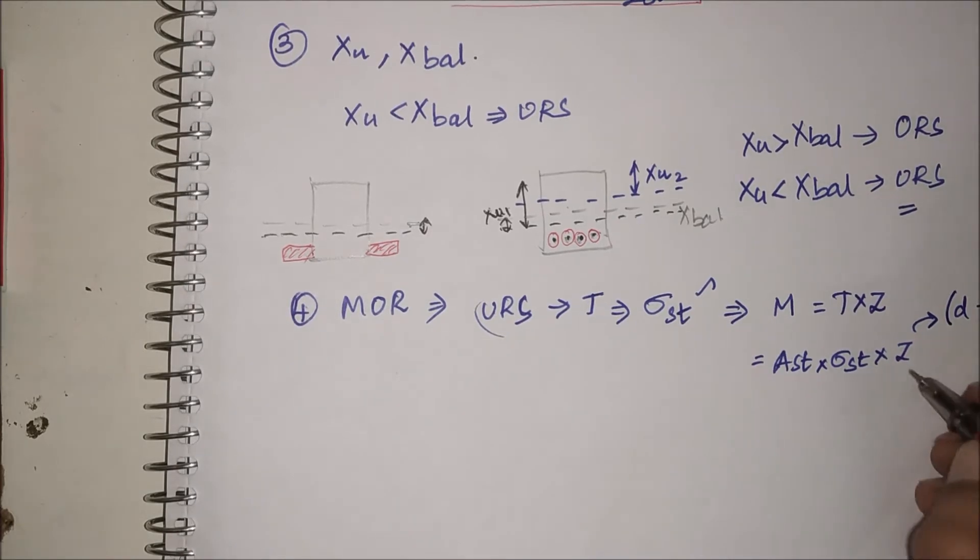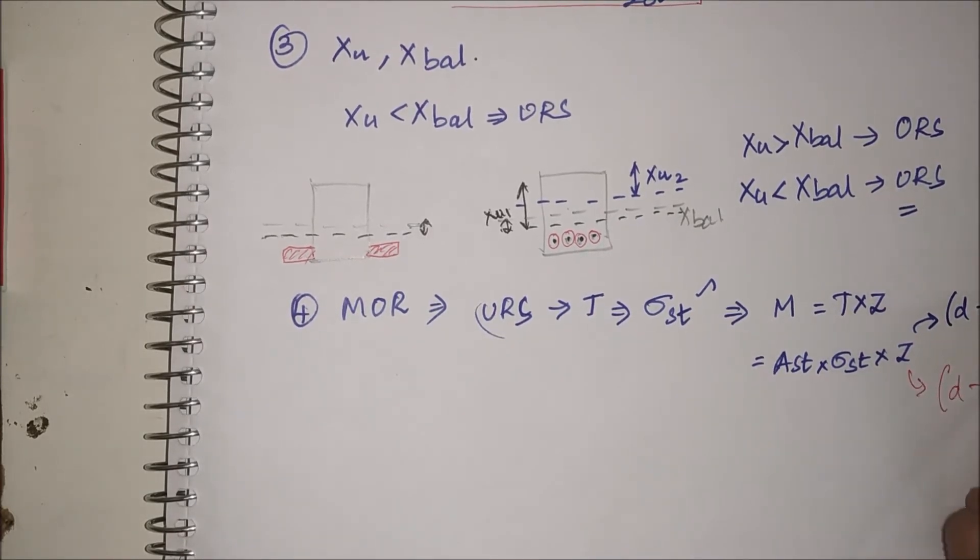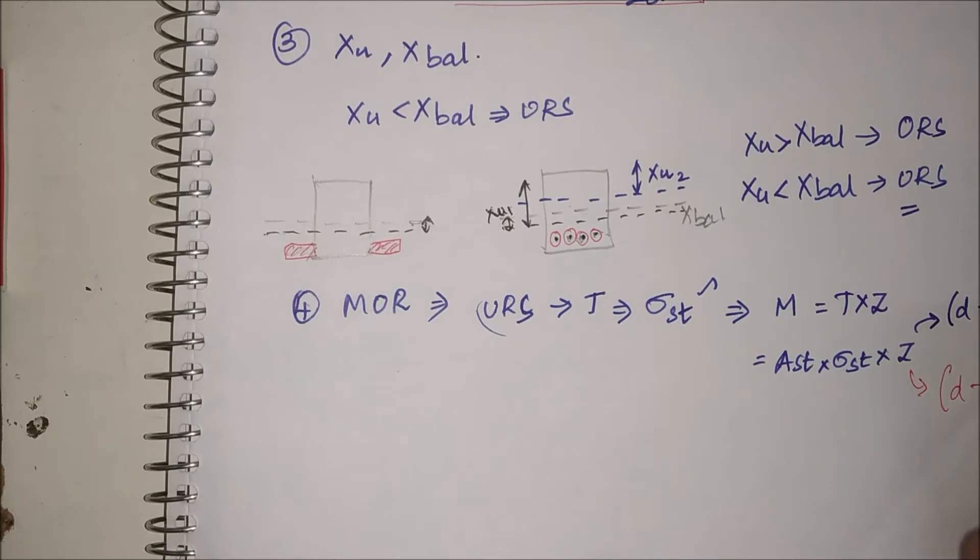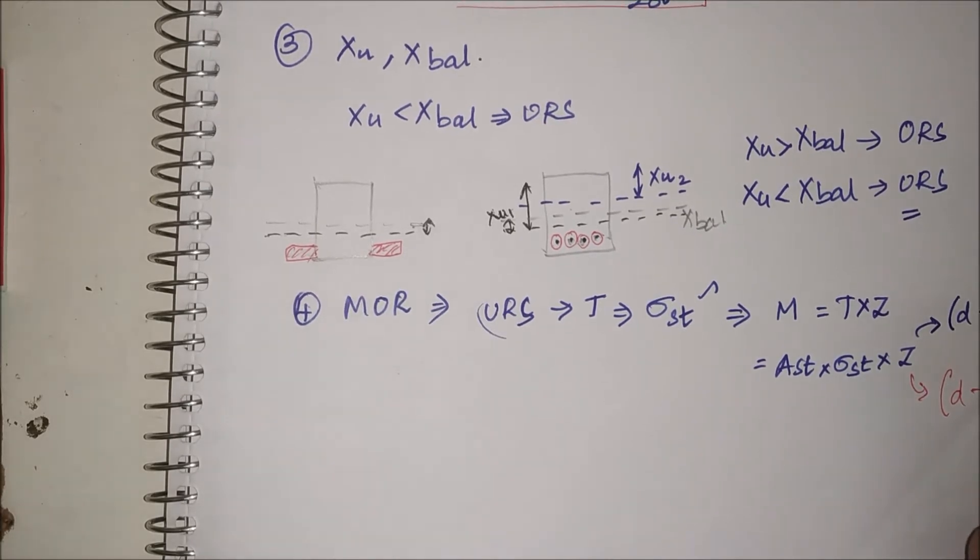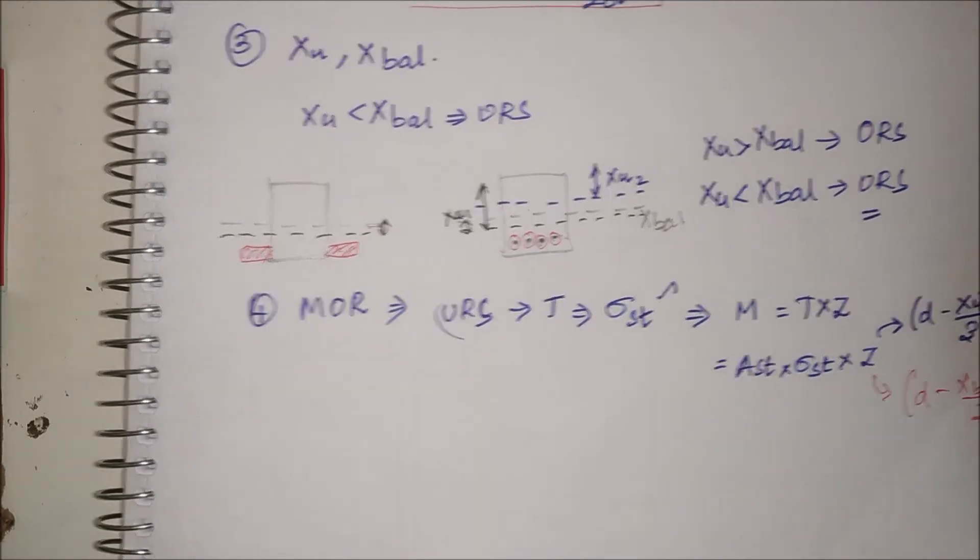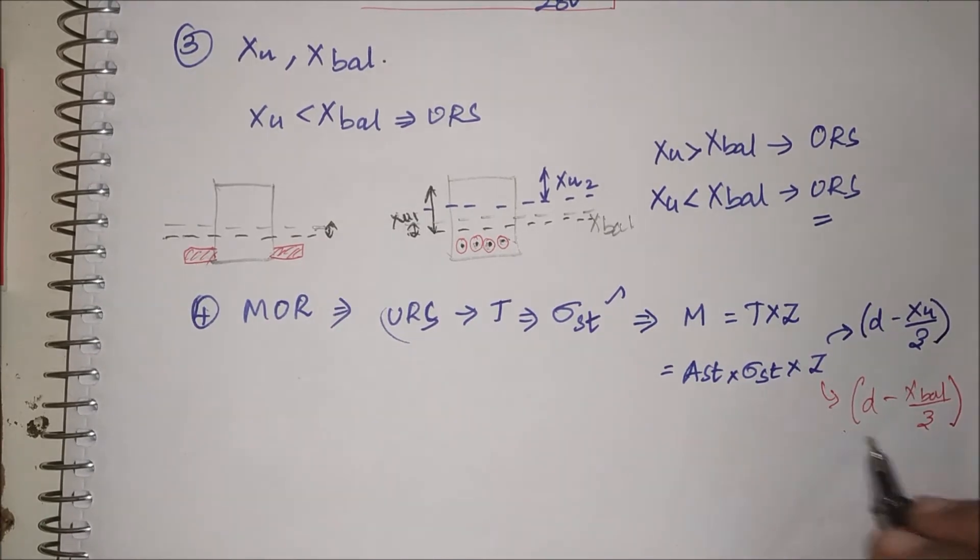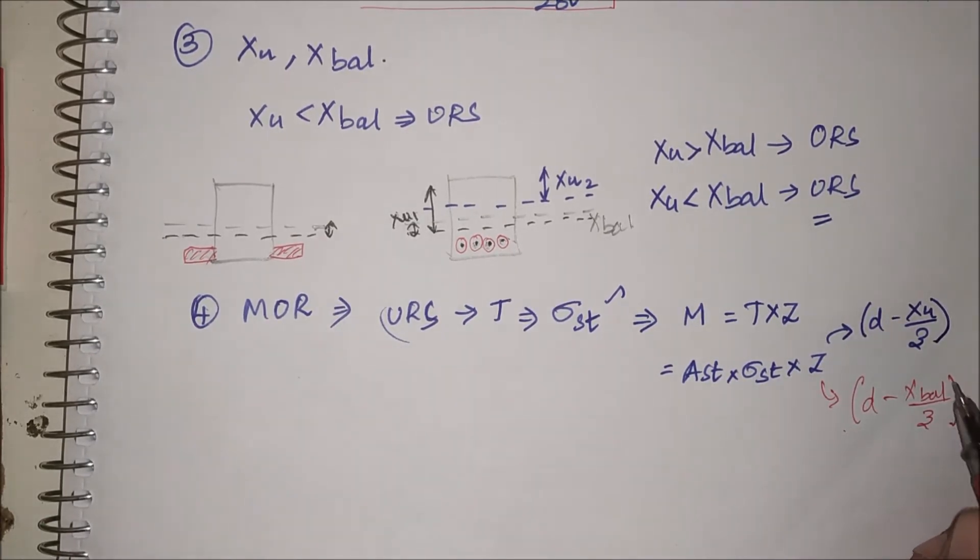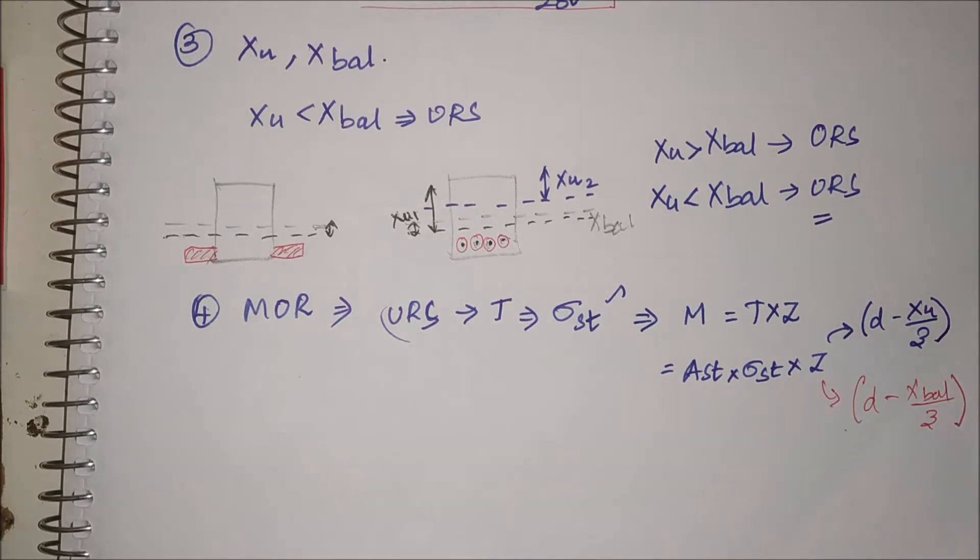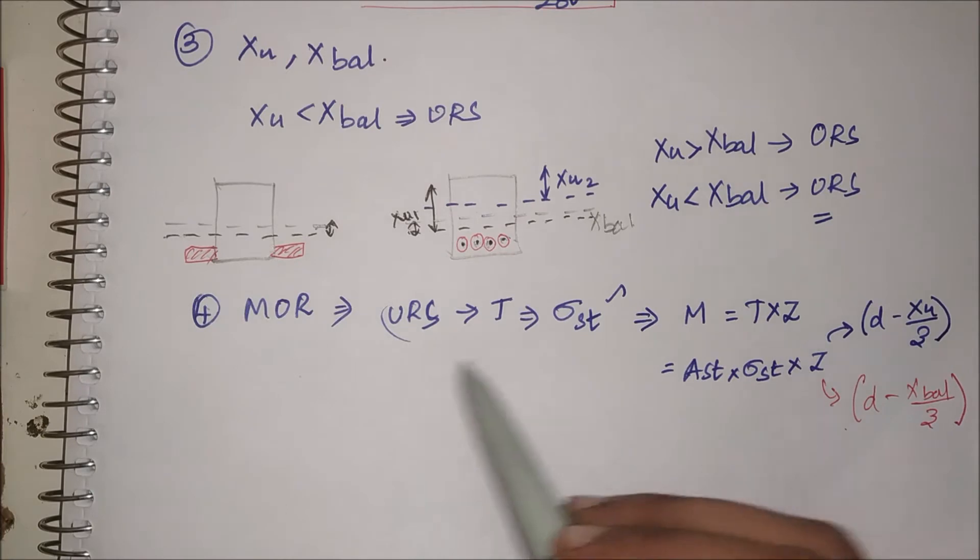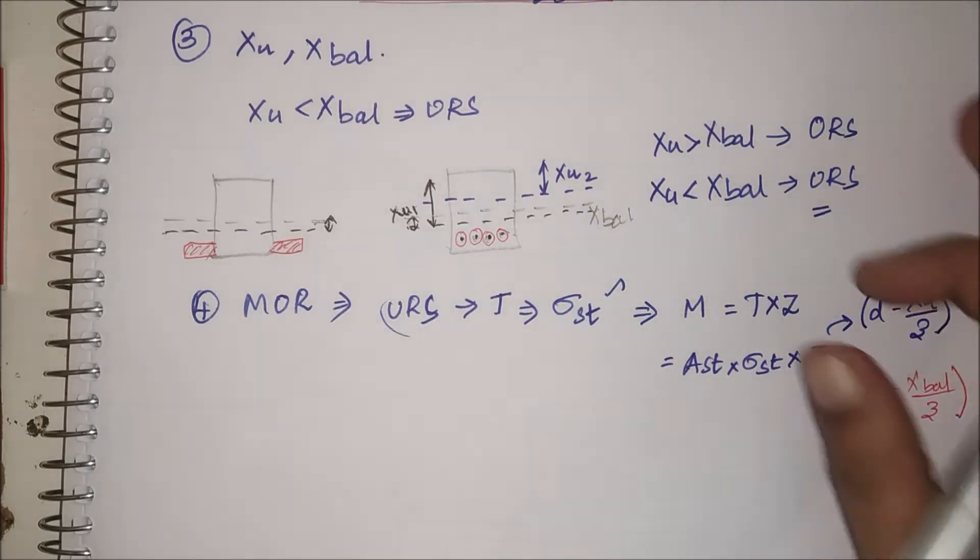If it had been a balanced section, then Z would have been d minus X balance by 3. You see the difference? So d minus Xu by 3 for under reinforced section. If it had been a balanced section, would have been d minus X balance by 3.